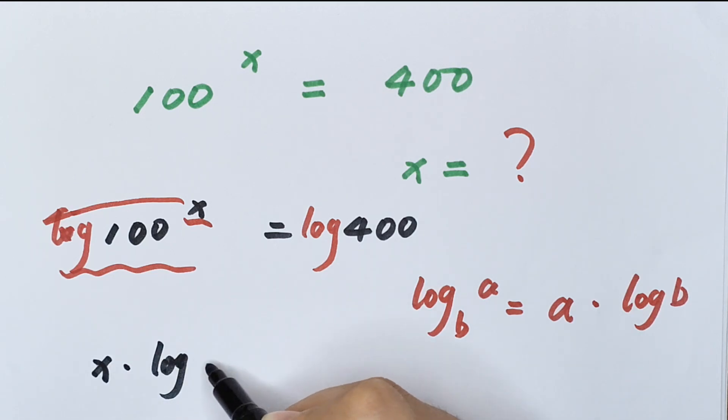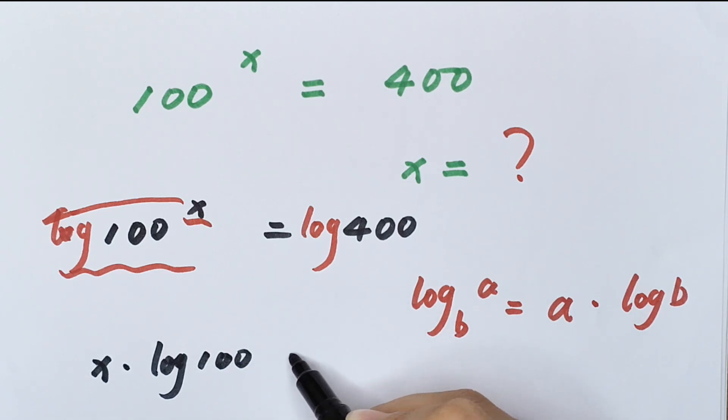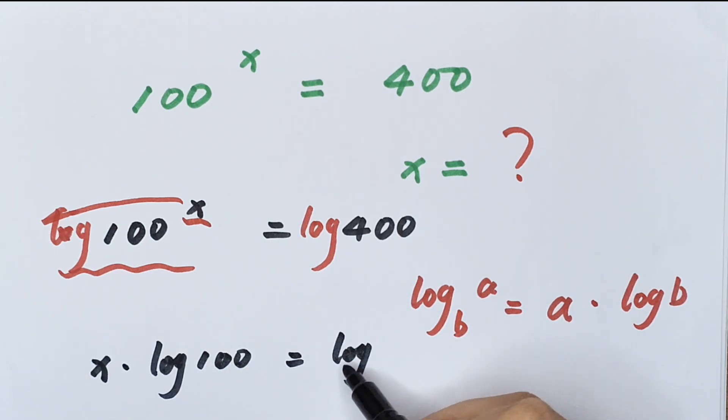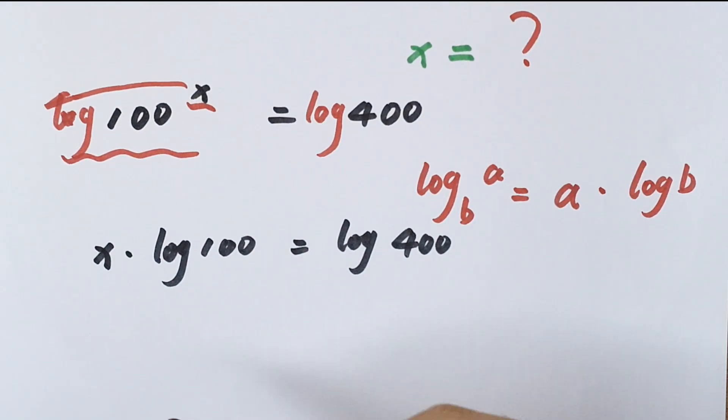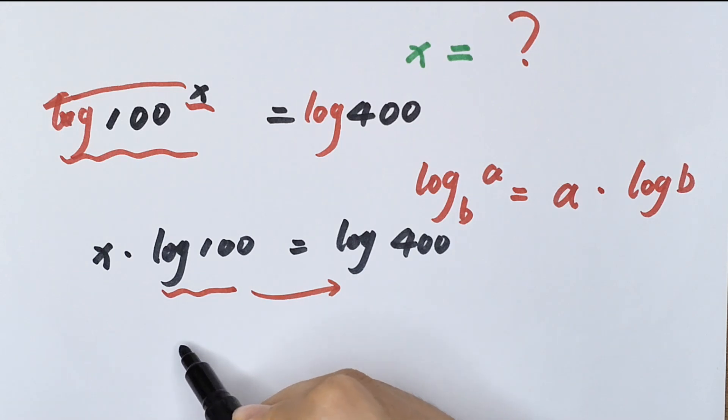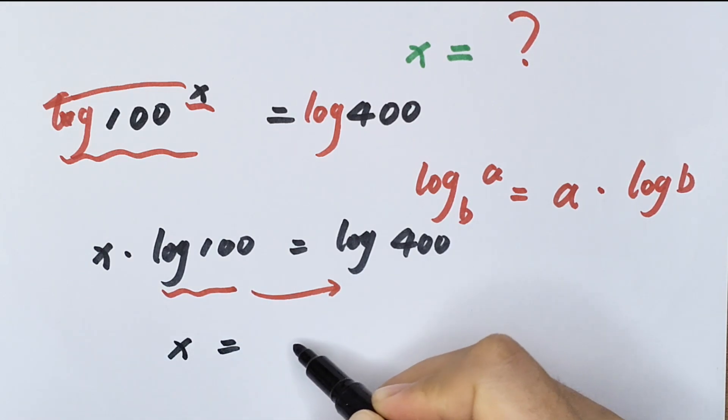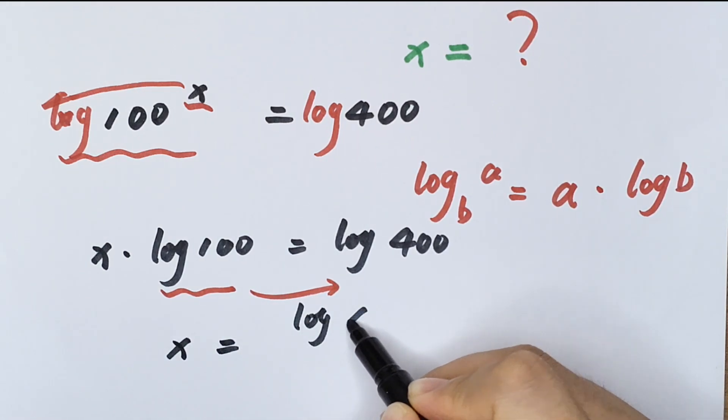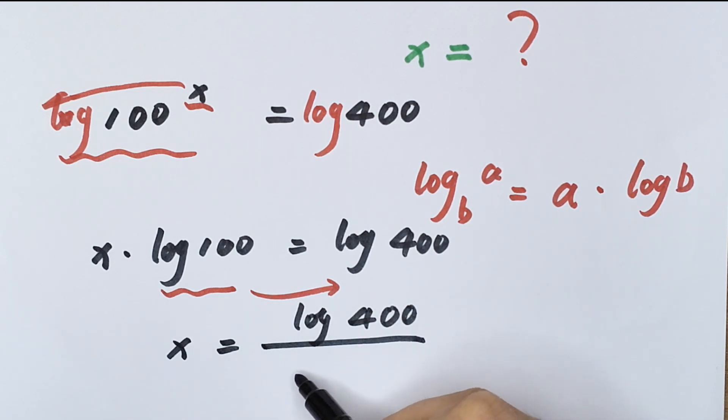Then we take this to the right side, so x equals log(400) divided by log(100).